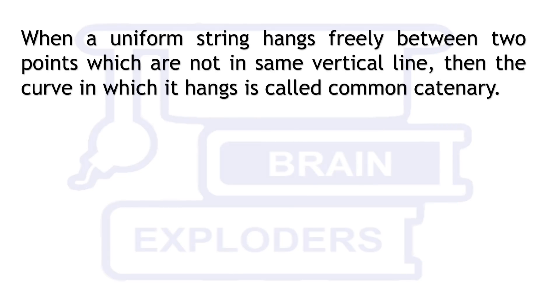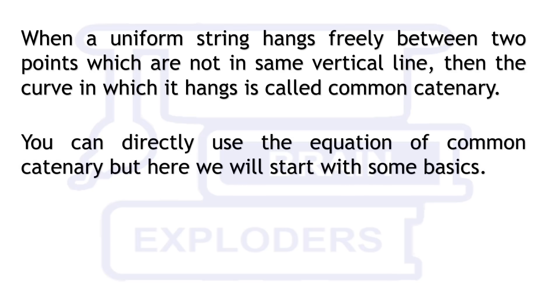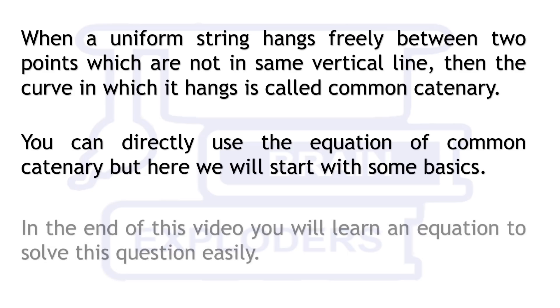When a uniform string hangs freely between two points which are not in same vertical line, then the curve in which it hangs is called common catenary. You can directly use the equation of common catenary but here we will start with some basics. In the end of this video you will learn an equation to solve this question easily.